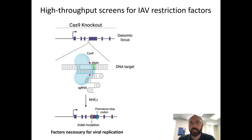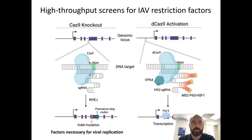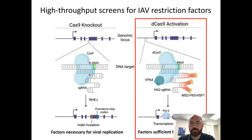A slight permutation of that technology is called dCas9 activation. Here, Cas9 is catalytically inactive and no longer cuts DNA. The guide RNA still targets it to a locus, but now to promoters instead of the middle of a gene. Transcriptional activators are dragged to these promoters, actually turning on genes and increasing expression rather than knocking them out. This gives you factors that are sufficient for viral control — factors that by themselves are able to stop viral infection.